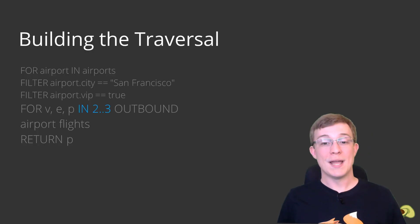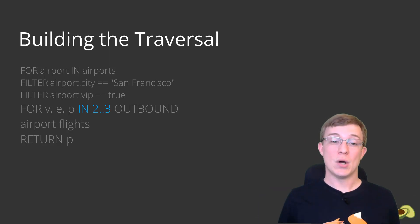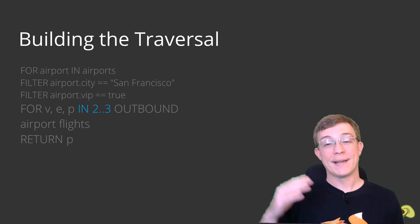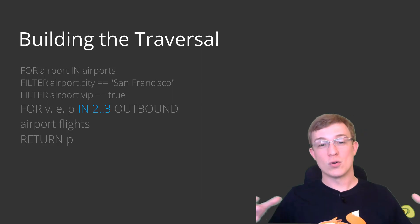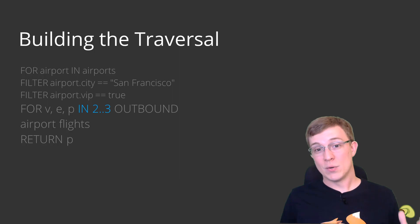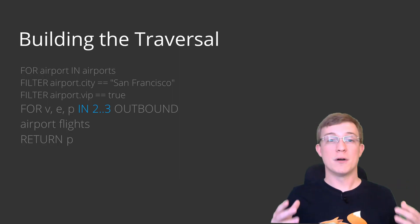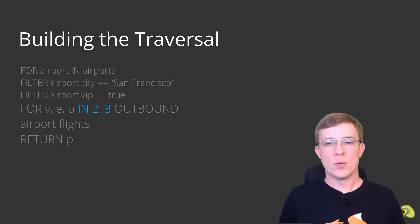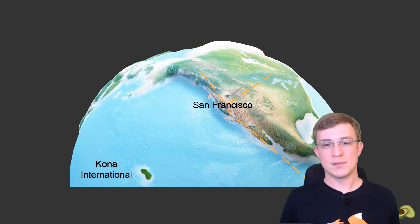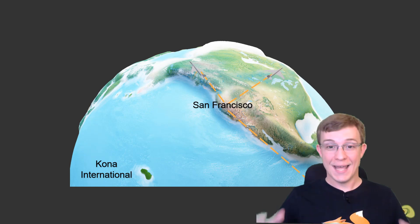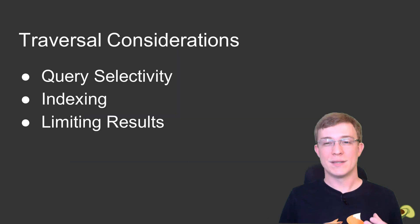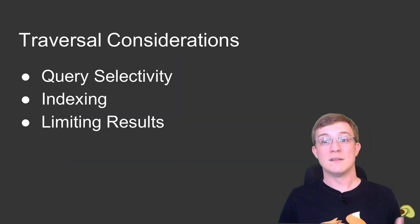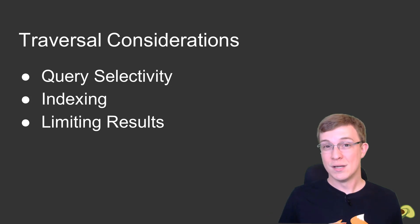Setting the minimum to two and changing our maximum to three means that the results contain only flights that at a minimum have one layover and at maximum have two layovers to get to Kona International. To start getting some flights that are a bit more affordable, simply increasing the depth of the traversal is a logical step. However, when traversing a graph, it is important to take into account the number of potential results. Just increasing the depth would result in a query that needs to traverse every single flight that leaves San Francisco, and then do the same for every flight that leaves the connected airport to find out if that flight goes to Kona International, which can be an expensive operation depending on the dataset. The answer to this problem will be dependent on your dataset and individual application. Making the query more selective, creating indexes to cover your queries, and limiting the number of results are definitely good places to start.